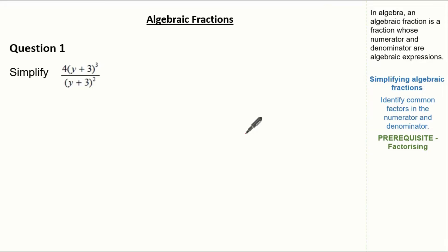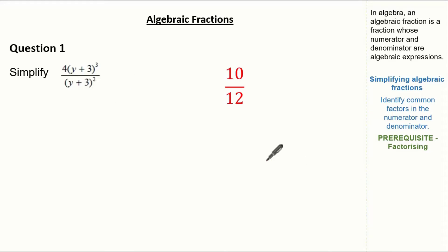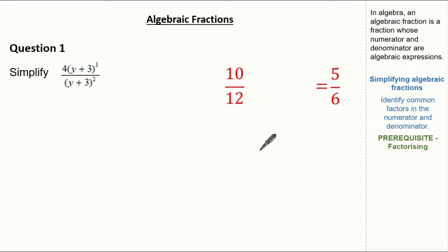Let's start by looking at a very simple question. The question wants us to simplify. It looks confusing but actually it's very simple — it's like the fraction 10 over 12. We know if we were to cancel down it gives us a fraction of 5 over 6. Breaking 10 over 12 gives us the factors of 2 times 5 as our numerator and 2 times 6 as our denominator.